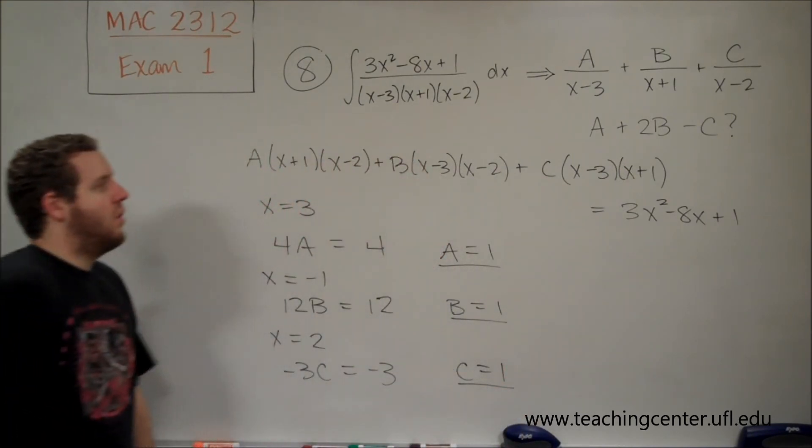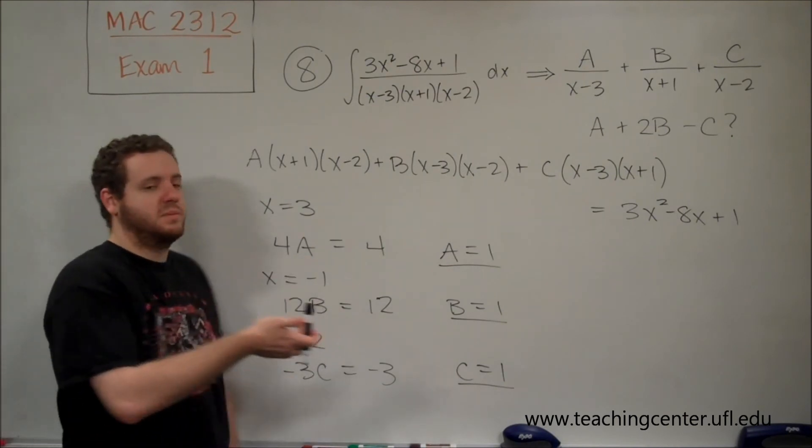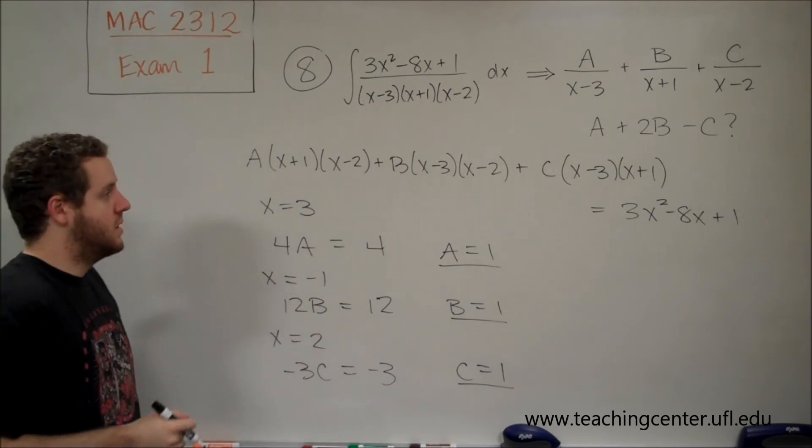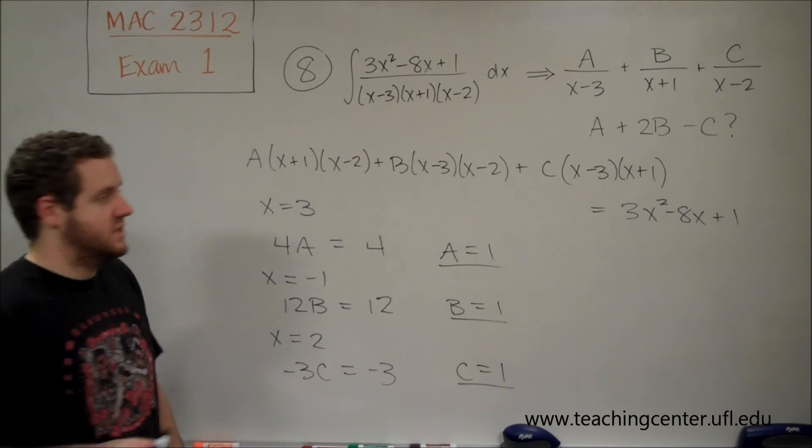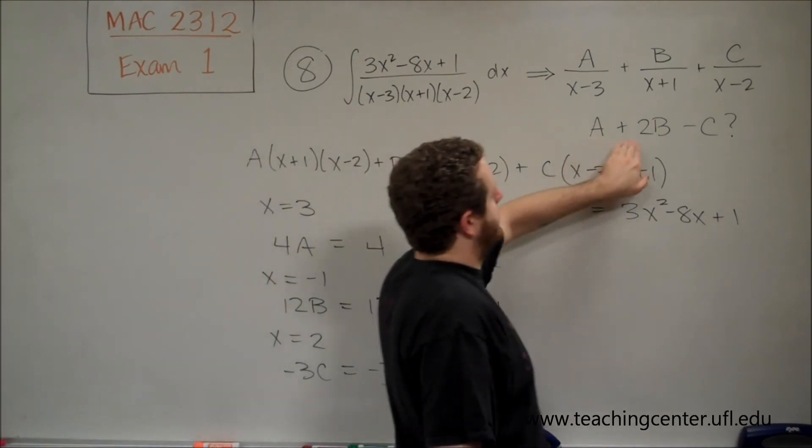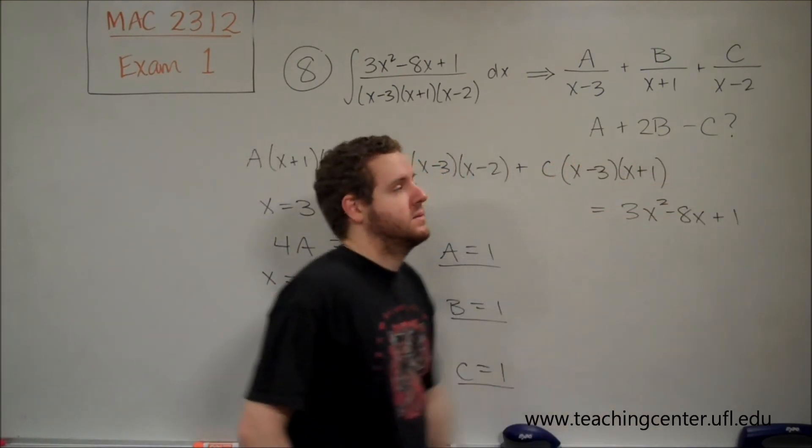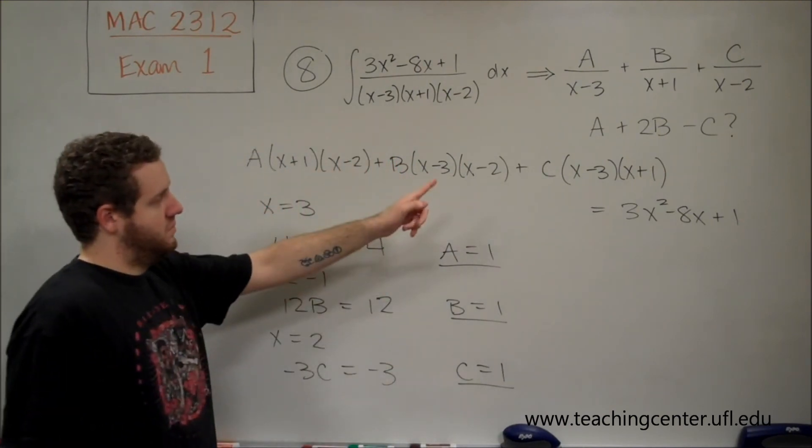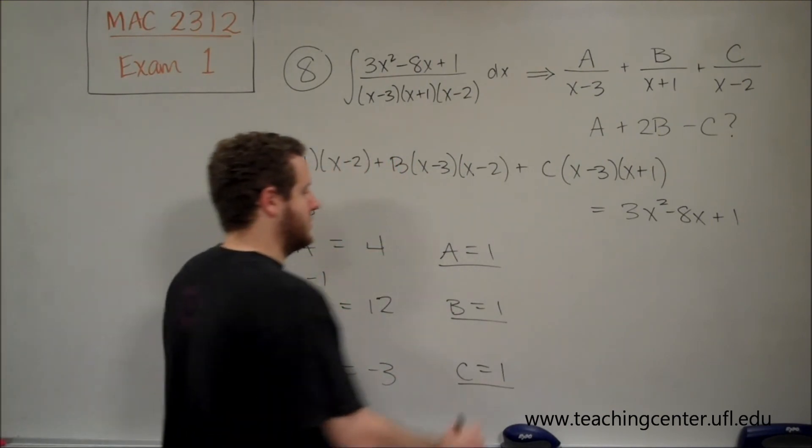So, we got that all of these numerators should just be 1. a, b, and c should all be 1. So, remember, the question here, though, was actually, what is a + 2b - c? So, we just have 1 + 2 - 1, which would equal 2.